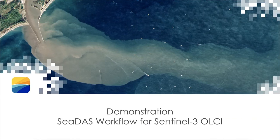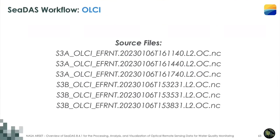Now for a live demonstration. We'll work with a data file from the ocean color website. Go to Data > Find Data and use the Level 2 browser to download OLCI data. The browser is sophisticated but dated-looking. Sentinel-3 missions are selected, with the scene set to fully match up the area of interest.